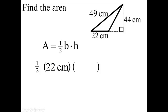We have one-half, the base is going to be this 22, and the height is not the 49. The height is the perpendicular distance between the base and the top point up here, so 44, not 49. 49 means nothing here; 44 is the height.